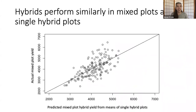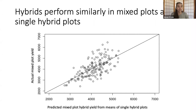Looking at the actual data and predicting mixed plot hybrid yield from the means of the single hybrid plots, the actual mixed plot yield is able to be predicted rather well, showing that the hybrids are performing similarly in mixed plots as they do in single hybrid plots. Given that there is only one field season and a limited amount of data, more field seasons and data are needed to draw more solid conclusions as to whether hybrids perform the same, better, or worse in mixture compared to single hybrid plots.